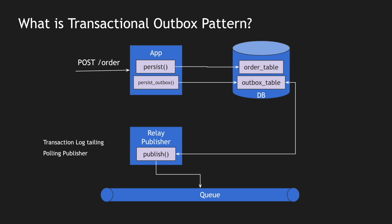Most of us have worked with these kinds of patterns — we just didn't know the pattern's name is called the transactional outbox pattern. You may think this is slightly more complicated than just persisting and publishing a message, but it helps us scale our system independently and provide a much more reliable order service for our consumers.